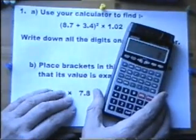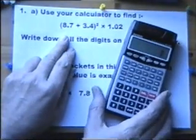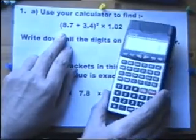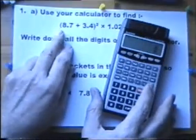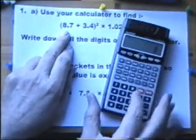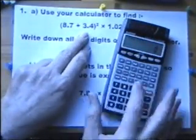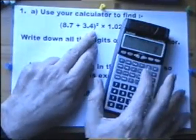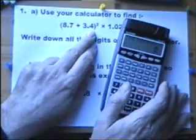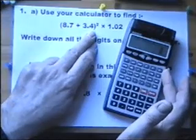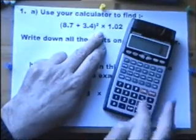Now this particular type of calculator is extremely good because you can literally type in the question as it goes. So let's do that. Turn the calculator on is always a good idea. Press open brackets. You should have some brackets on your calculator. 8.7 plus 3.4 close brackets. And then you usually go squared button. But some calculators don't actually have those now. So you might have to use a different button to raise the power. Anyway, squared multiplied by 1.02 equals.